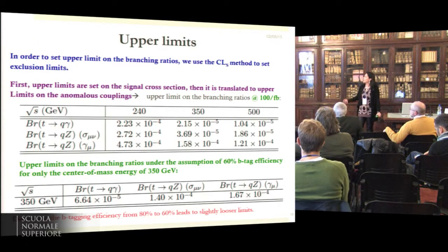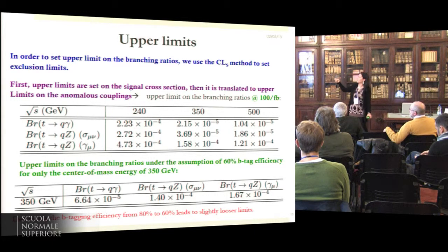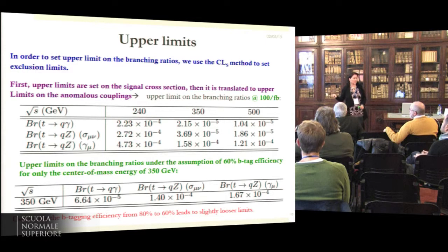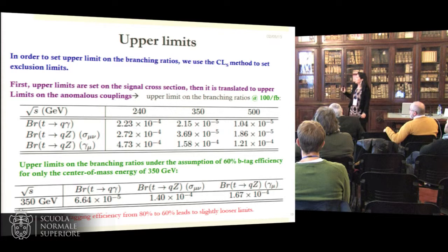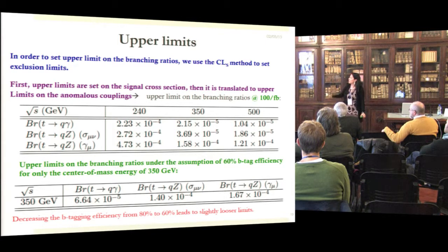In order to set the upper limits they've used the CLS method, so the upper limits are translated into limits on the anomalous couplings. These numbers that you see here are with the statistics of 100 femtobarn that is usually the one quoted by the ILC—it's not our statistics. There is also a number later on that is consistent with FCC-ee. These are the numbers you can see, and the interesting thing is to see the change with lower BTAG efficiency.